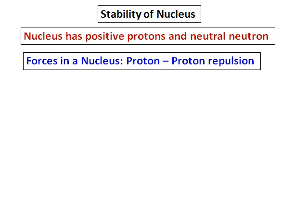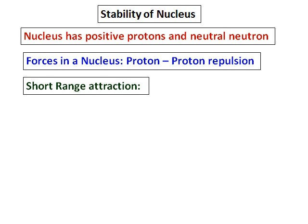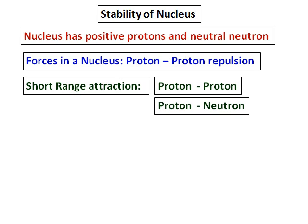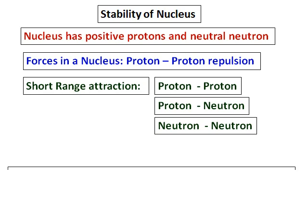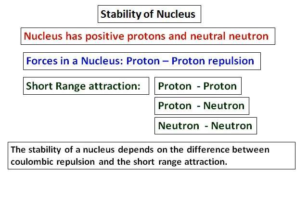One force which exists in the nucleus is the proton-proton repulsion, the repulsion between the positive charges. And along with the repulsion, we have certain short range attractions inside the nucleus between a proton and a proton, a proton and a neutron, and a neutron and a neutron. The stability of the nucleus depends on the difference between the coulombic repulsion and the short range attraction.